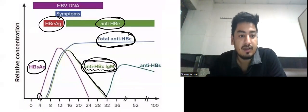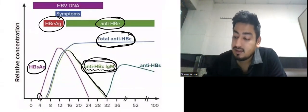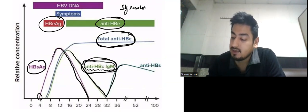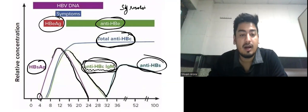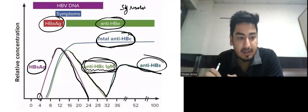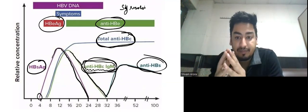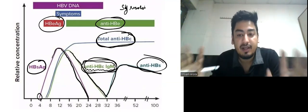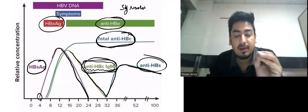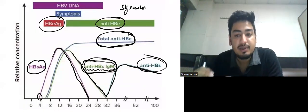After the appearance of anti-HBe antibody, there is disappearance of HBeAg. Since this is the graph of self-resolution, HBsAg becomes negative and anti-HBs appears. Anti-HBs is a protective antibody — if anti-HBs appears, it will kill all the HBV DNA and the person will become HBsAg negative. So anti-HBs appearance is the marker of resolution.